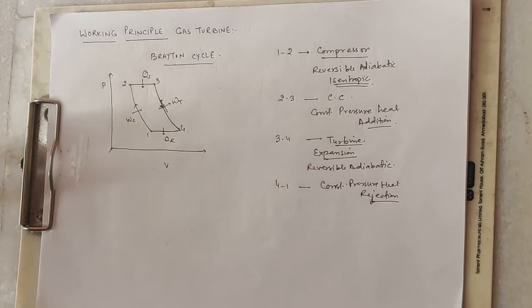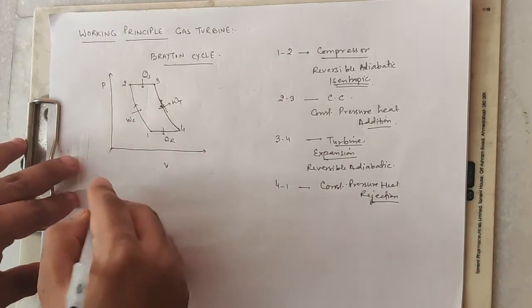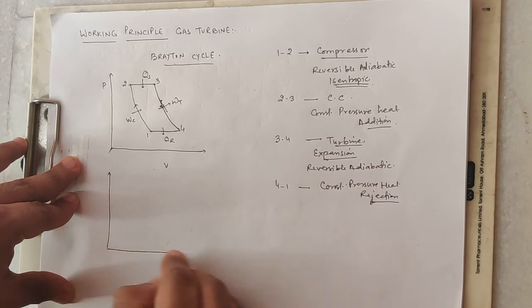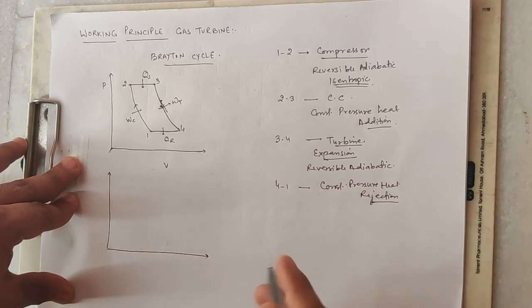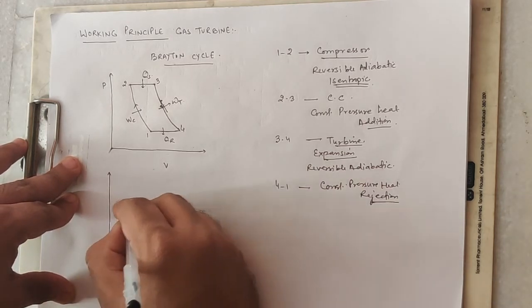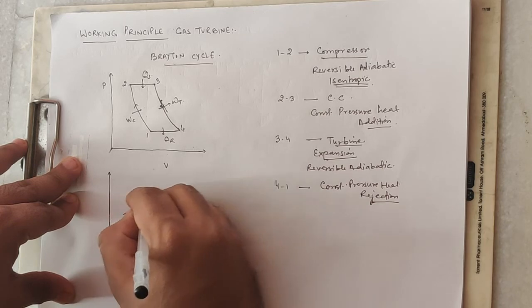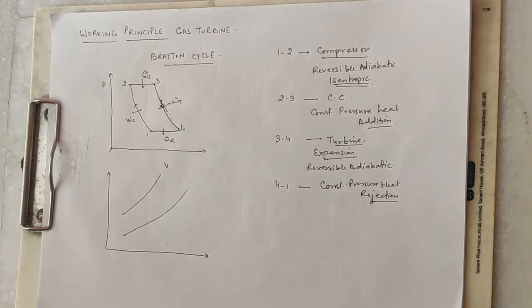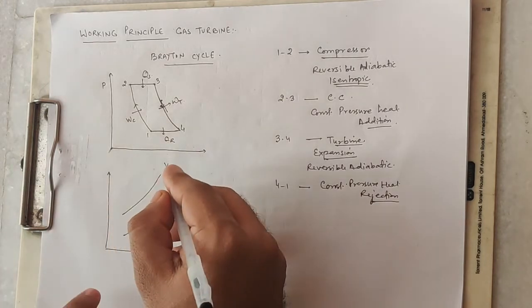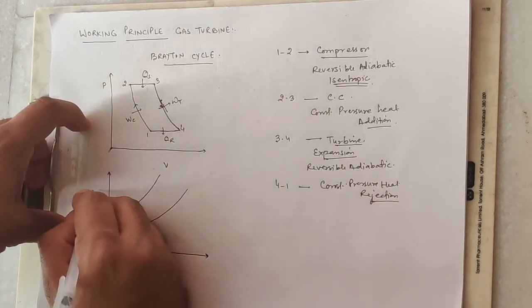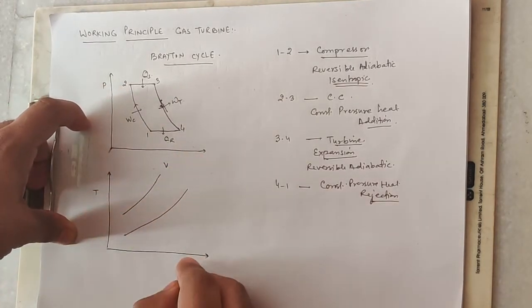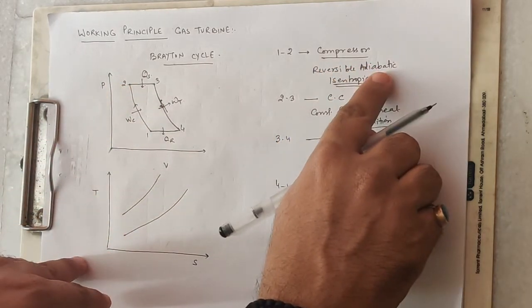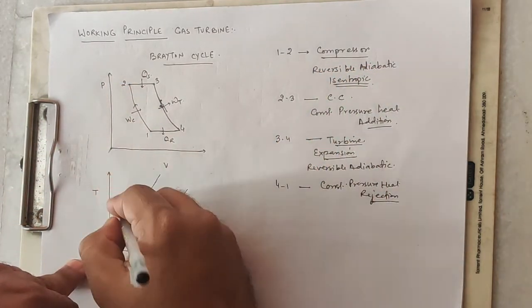We can also plot this Brayton cycle on a TS diagram. On the TS diagram we have constant pressure lines, which are diverging. Process 1 to 2 is the compressor — it is a reversible adiabatic, meaning it is an isentropic process, so it is represented by a vertical line on the TS diagram.